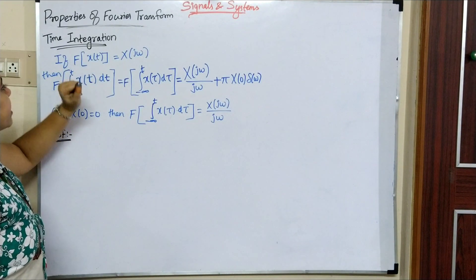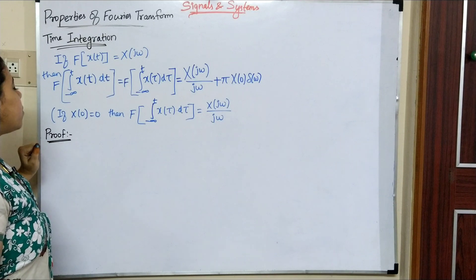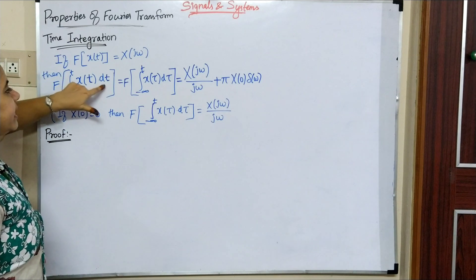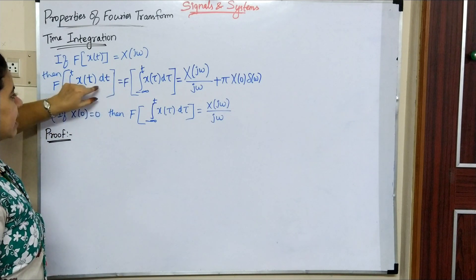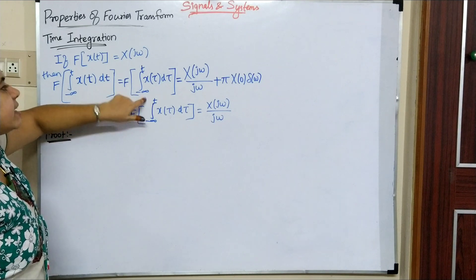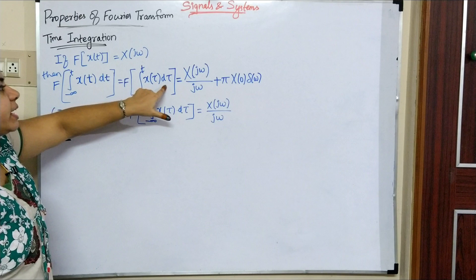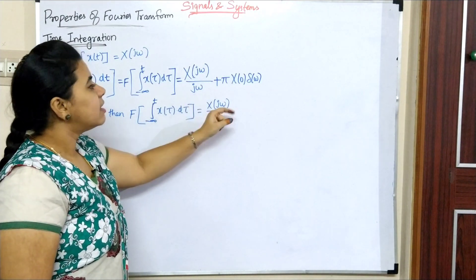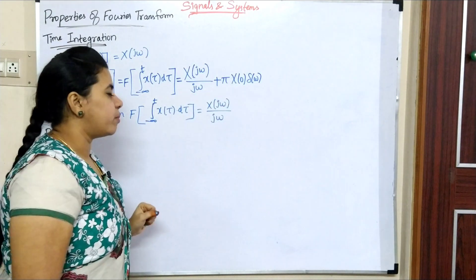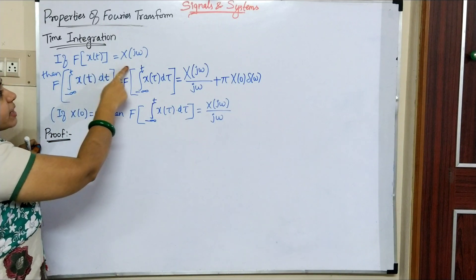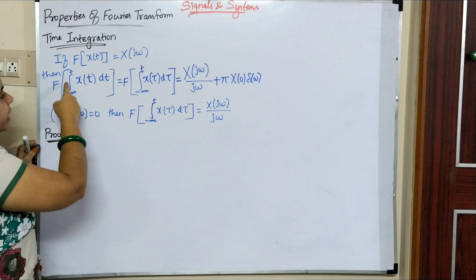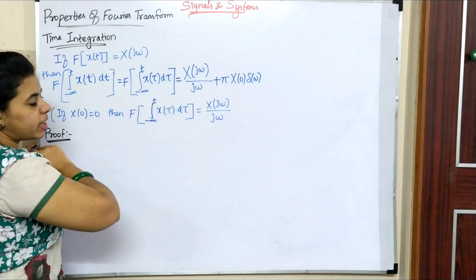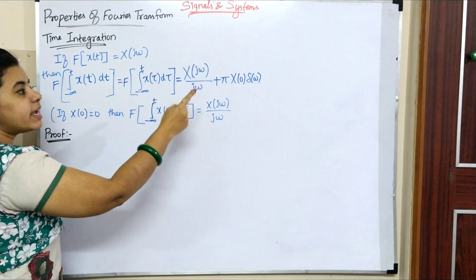If Fourier transform of x(t) equals X(jω), then Fourier transform of the integral from minus infinity to t of x(τ) dτ equals X(jω) divided by jω, plus π·X(0)·δ(ω). That is, x(t) has Fourier transform X(jω), and integration of x(t) has Fourier transform X(jω)/jω plus π·X(0)·δ(ω).